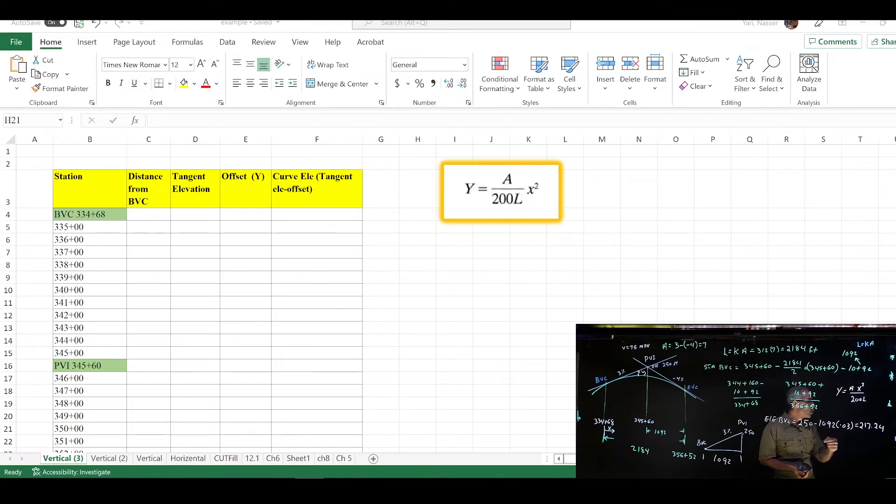And then go to the next whole station, which becomes 335. And then go ahead and type in each 100 feet, 336, 337, until you get to 345. And then go ahead and write down the PVI station, which is the center, and that is 345+60.